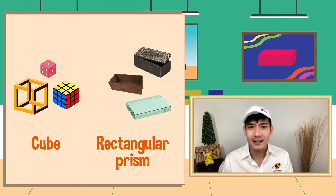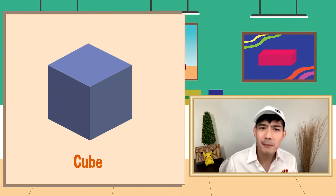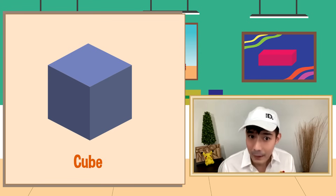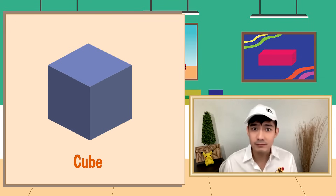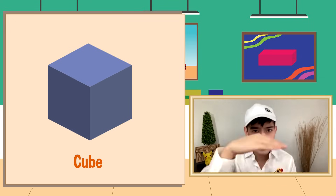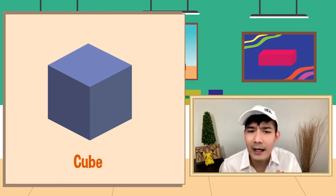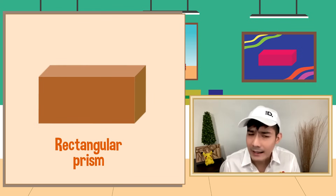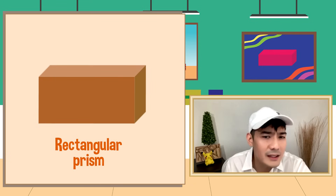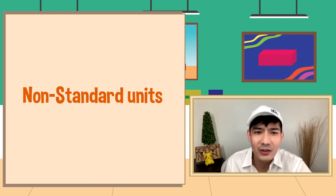Ang dalawang example ng shape o solid figure na ito ay ang cube at rectangular prism, at marami na tayo nyan dito sa MacDali Museum. Ang cube ay merong pare-parehos na sukat pagdating sa length, width, at height nito — para siyang pinagtabi-tabi na square. Samantala, hindi naman equal ang length, width, at height ng rectangular prism. At alam nyo ba na pwede natin malaman ang volume ng 3D figures gaya ng cube at rectangular prism sa pamamagitan ng non-standard units.